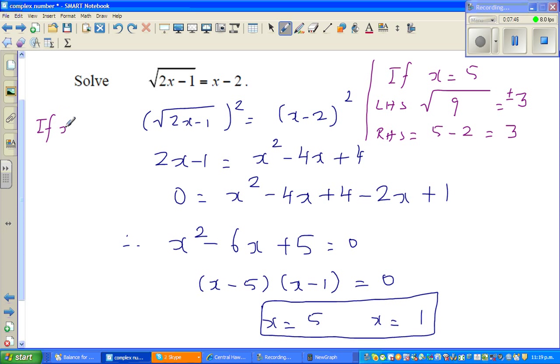But what happens if x is 1? When x is 1, your left hand side will become square root of 2 times 1 is 2 minus 1, which is 1, which is plus or minus 1. And if you put 1 here, 1 minus 2 is negative 1. Here, both answers seem to be right because if you're taking only the positive root, only x equals 5 is true.